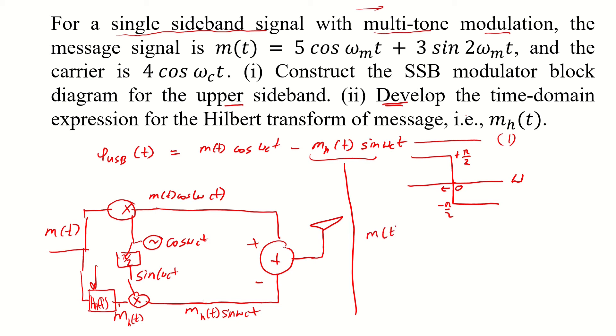So if we have m of t which is equivalent to 5 cos omega mt plus 3 sin 2 omega mt, the transformation based on the Hilbert transform filter we would have a case function.